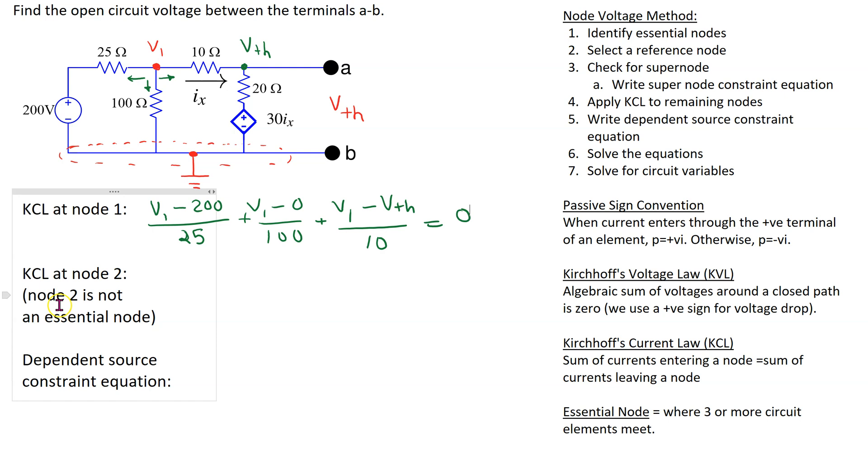Next let's apply KCL at node 2. Node 2 is not an essential node. It is an ordinary node because only two circuit elements are meeting here, but we are interested to write this KCL equation because then Vth is now a variable in the equations. So at this node we have two branch currents. This branch current through the 10 Ohm resistor is Vth minus V1 over 10, and this branch current through the 20 Ohm resistor is Vth minus 30 Ix divided by 20, and this is equal to 0.